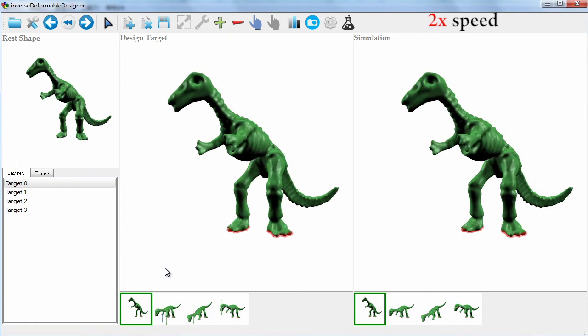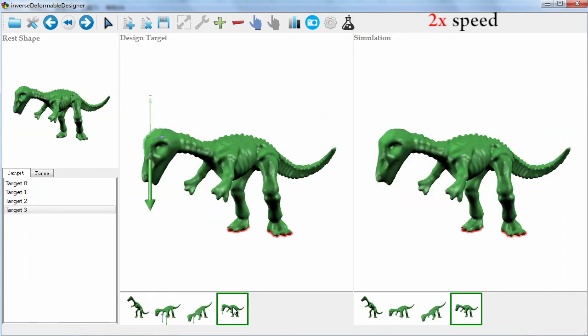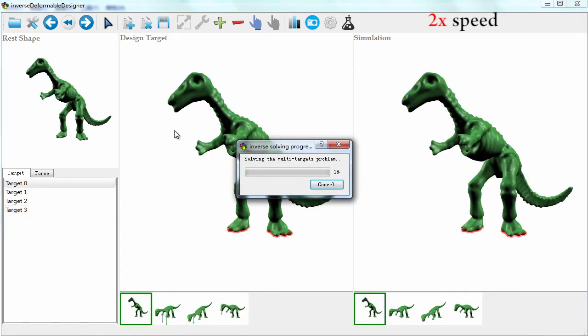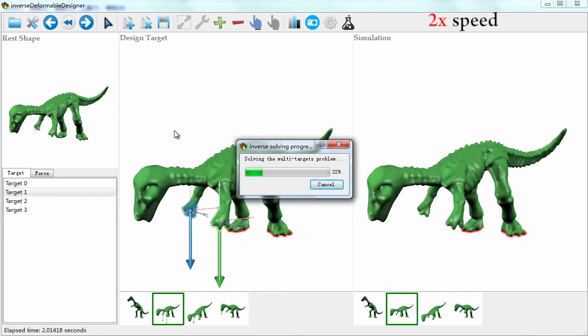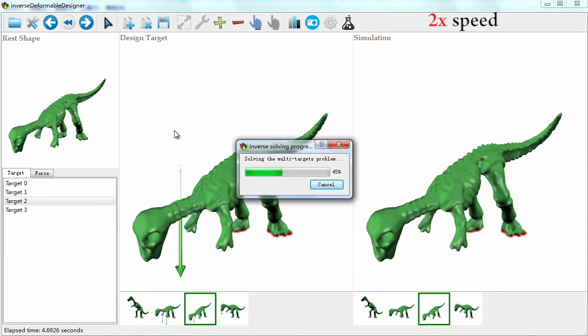The user can also specify multiple deform shapes of an object together with the external forces needed. Our method solves a rest shape for each target individually, then finds a single approximated shape by subspace projection.